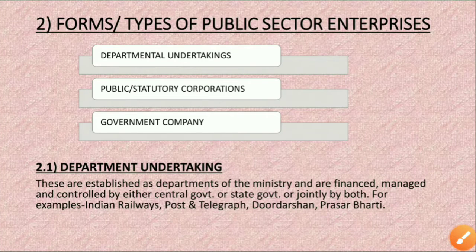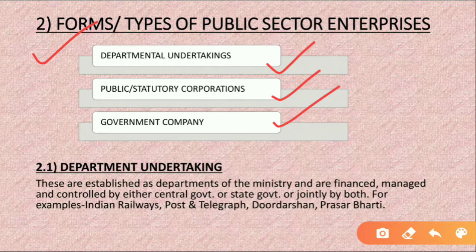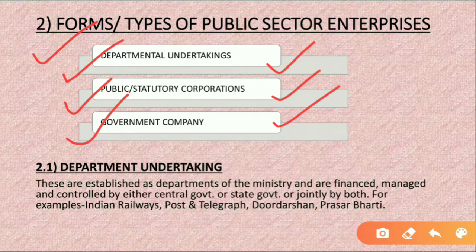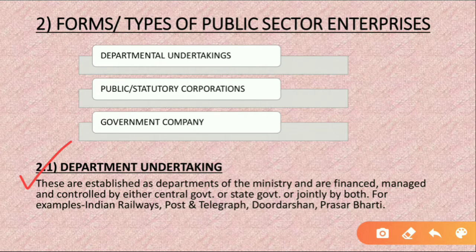Hello and welcome everyone. In the previous class I told you about the different types of public sector enterprises. As we have seen, there are three different types: departmental undertakings, public or statutory corporations, and government companies. Yesterday I explained the first form, which is the departmental undertaking.